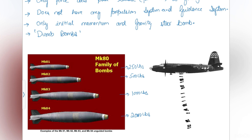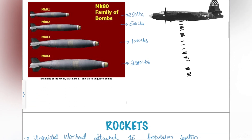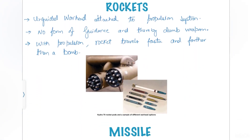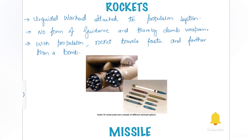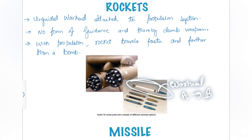Bombs are used to destroy large portions of a target area — buildings, enemy tanks, fuel depots, airstrips, or terrorist camps — where precise single-target engagement is not required. Coming to rockets: rockets are unguided warheads attached to a propulsion system. They are essentially bombs with a propulsion system added. No form of guidance is present, so they are still known as a dumb weapon. With propulsion, a rocket travels faster and farther than a bomb.